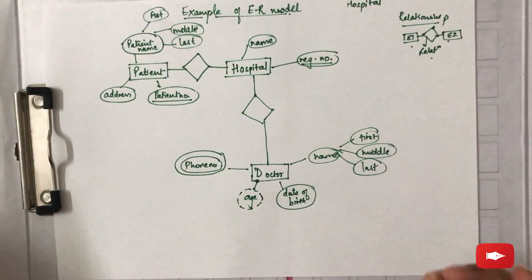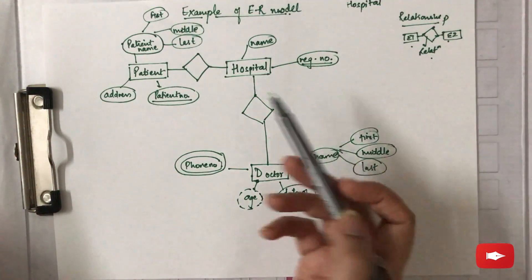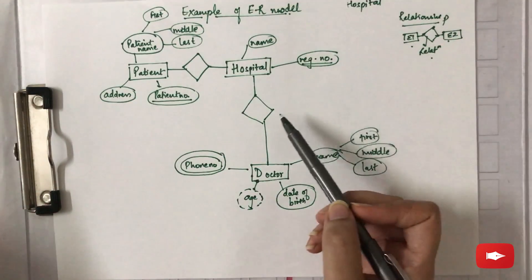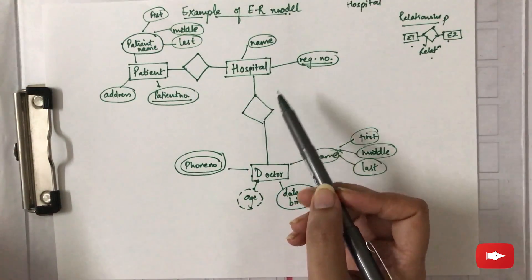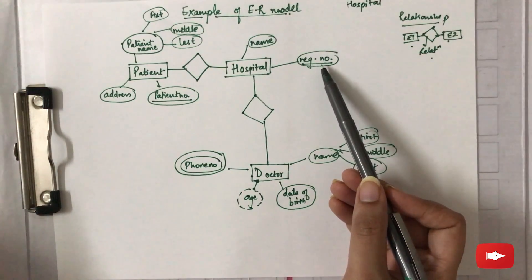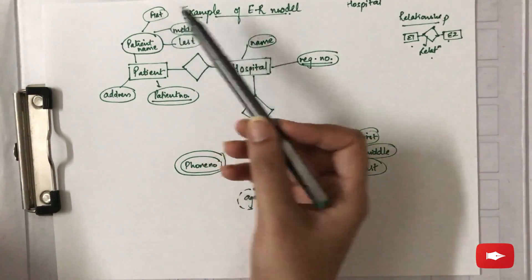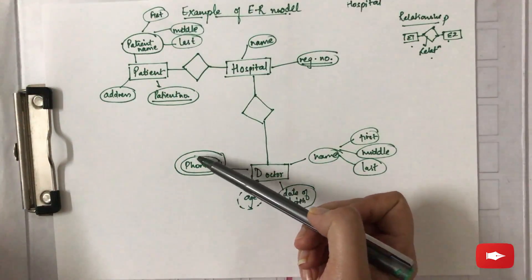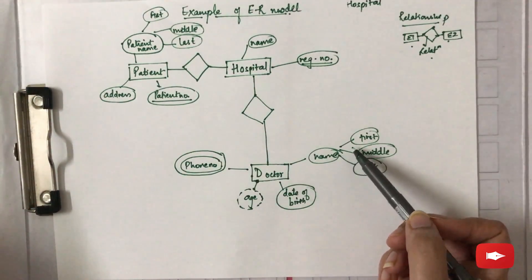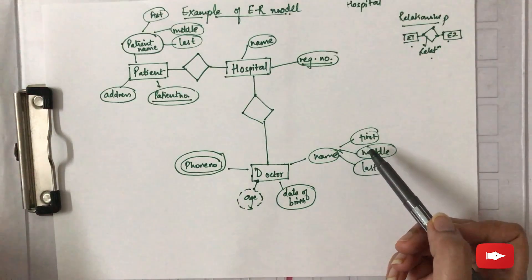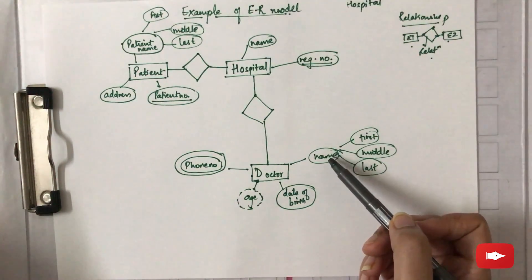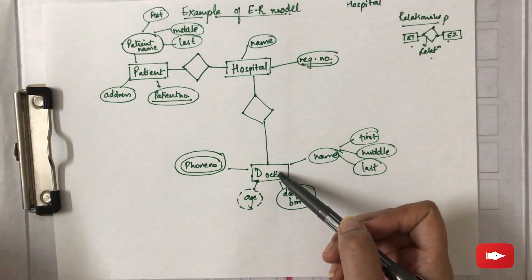This is a basic example of an ER diagram where entities are represented in rectangular boxes, attributes in oval boxes, and relationships in diamond boxes, all linked using lines. Primary keys are underlined, multi-valued attributes are represented by double-lined ovals, and composite attributes have their subparts attached to the main attribute of that entity.